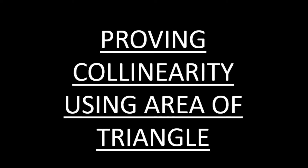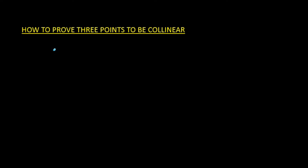In this video we will prove three points to be collinear with the help of the formula for area of triangle. Let us first understand what we mean by collinear points. As the name suggests, collinear points are points that lie on one line. Suppose I have a line and points A, B, and C all lying on line LM — we say that points A, B, and C are collinear.